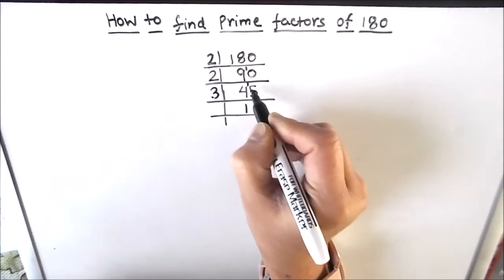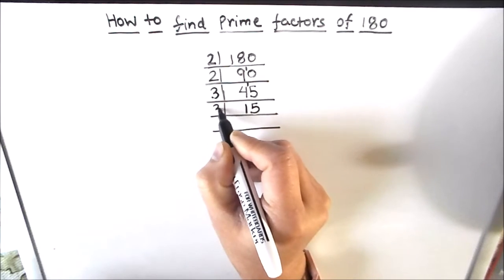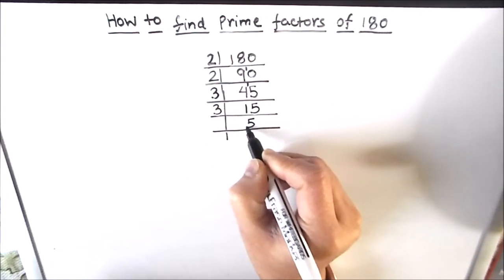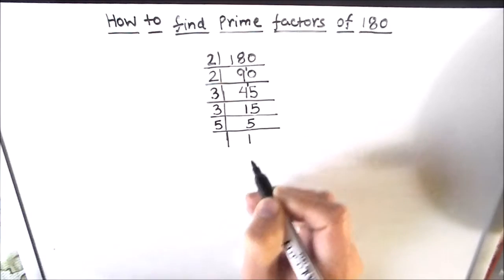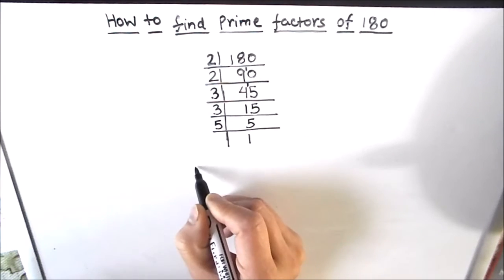Again, 15 is divisible by number 3. 3 times 5 is 15, and 5 is a prime number. It is only divisible by number 5. 5 times 1 is 5.